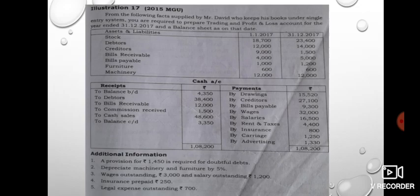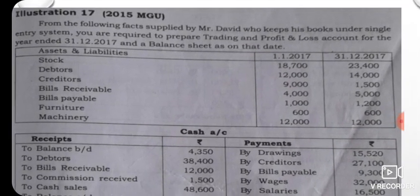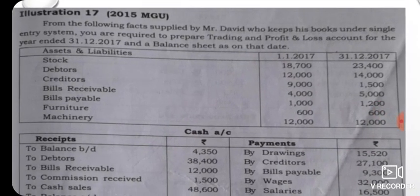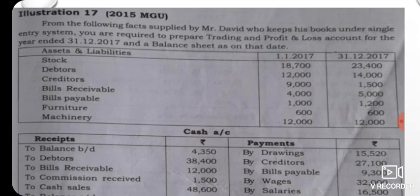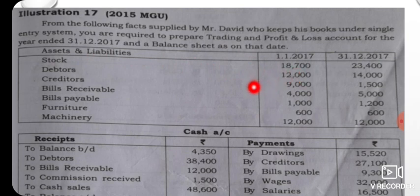We are going to work through a previous year question. From the following facts supplied by Mr. David, who keeps his books under a single entry system, you are required to prepare a trading profit and loss account for the year ended 31st December 2017, and a balance sheet as on that date. This is an incomplete records, single entry problem.